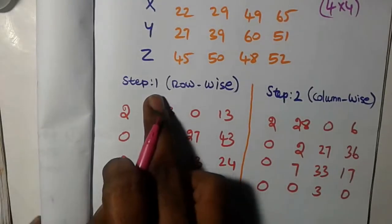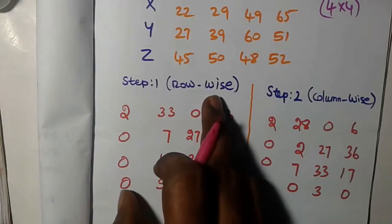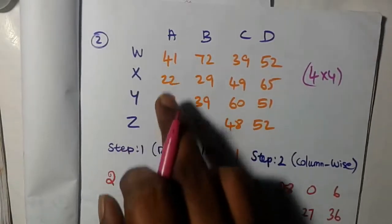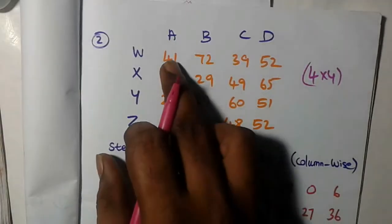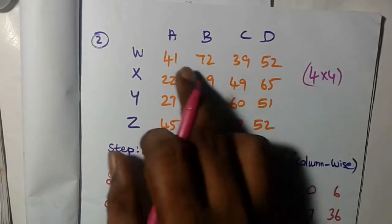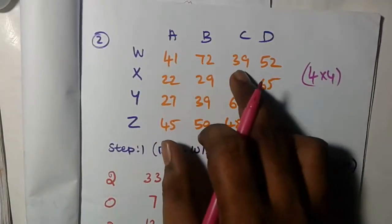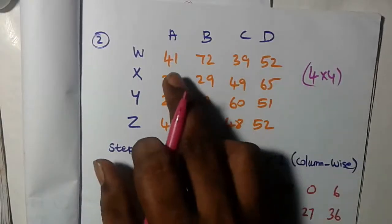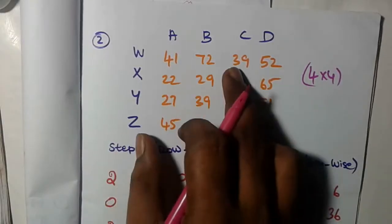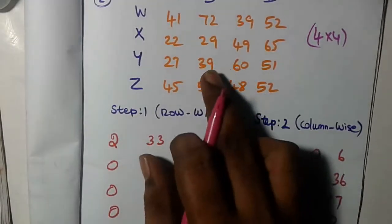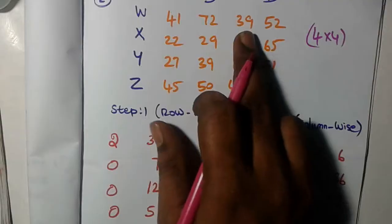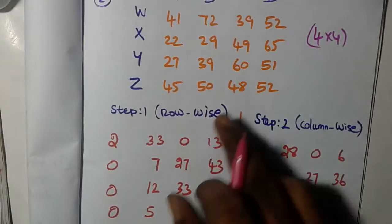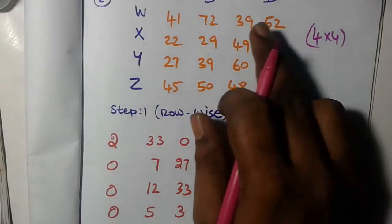Step 1 is row-wise reduction. For each row, choose the least number. In the first row, the smallest number is 39. Subtract 39 from all entries: 41 minus 39 is 2, 72 minus 39 is 33, 39 minus 39 is 0, 52 minus 39 gives the next value.